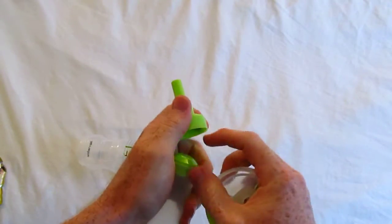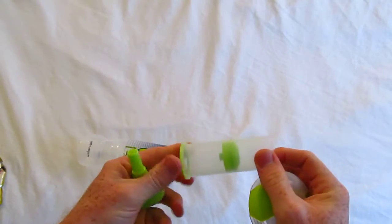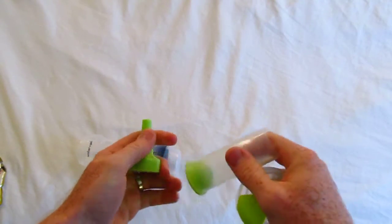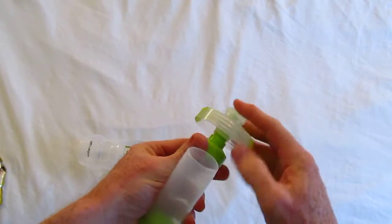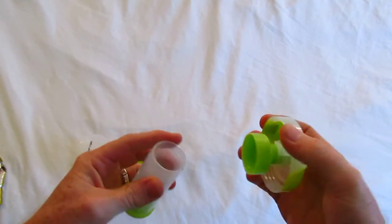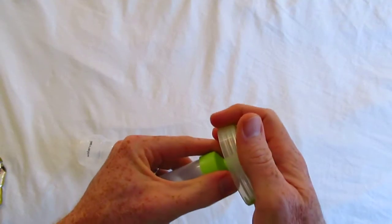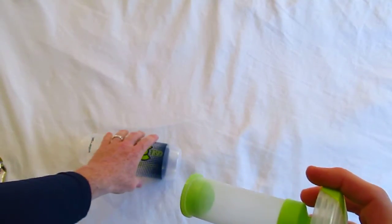You can just toss it all in your dishwasher on the top rack and it comes out nice and clean. So after you run, it makes the cleanup process a lot easier. Some bottles are a little more hard to clean in some of those spots, but this one comes apart, nice and easy.